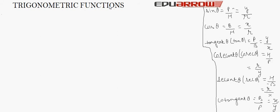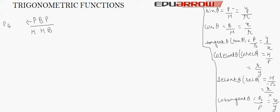There is a simple rule to remember these formulas — that is: Pandit, Badri, Prasad, Har, Har, Bole. This P stands for Pandit. This is a shortcut for learning the trigonometric ratios.